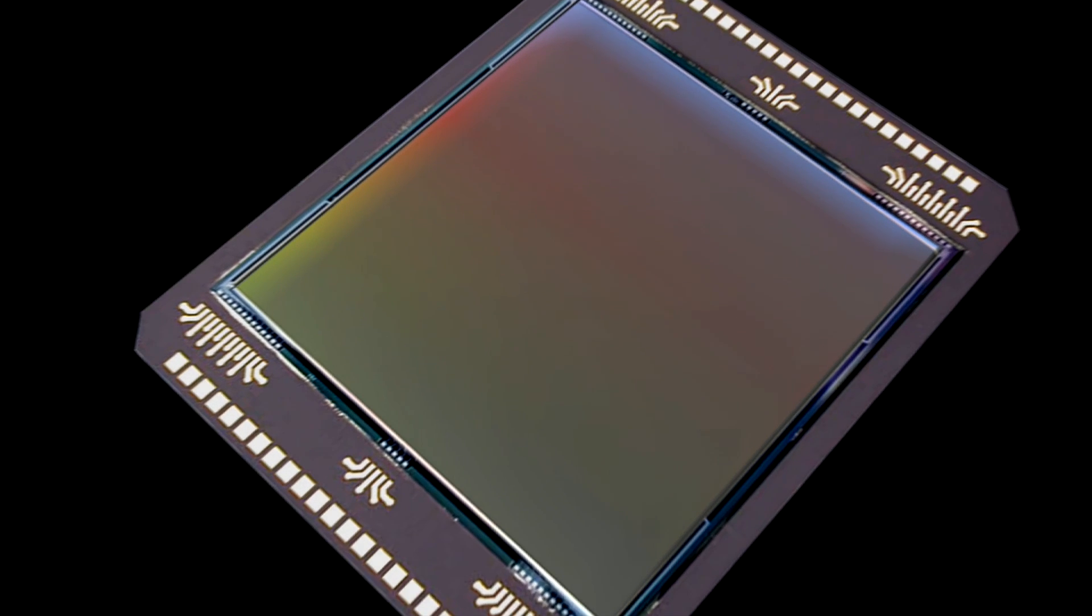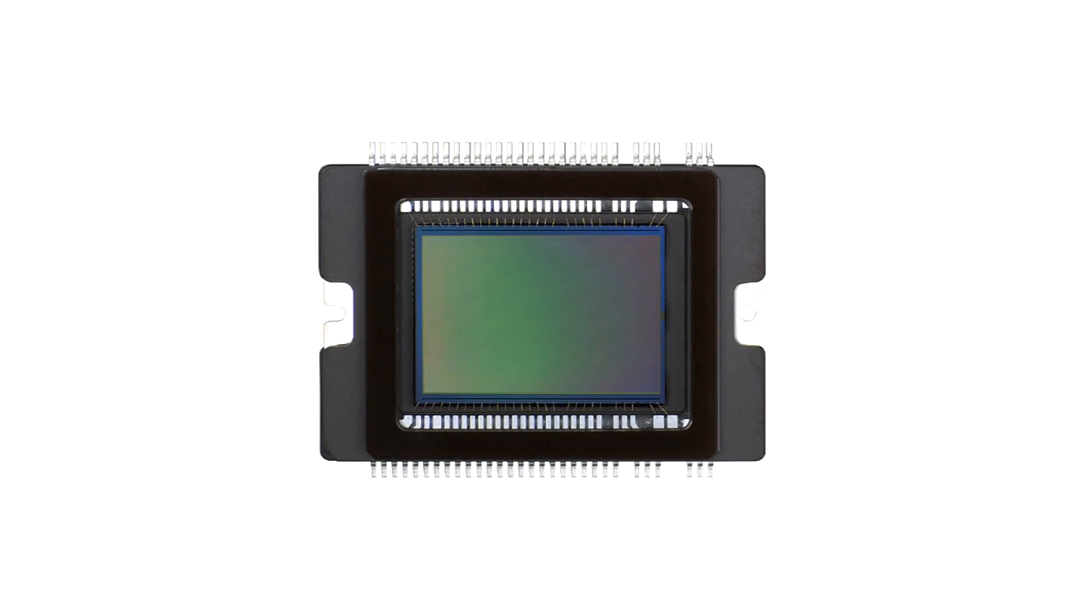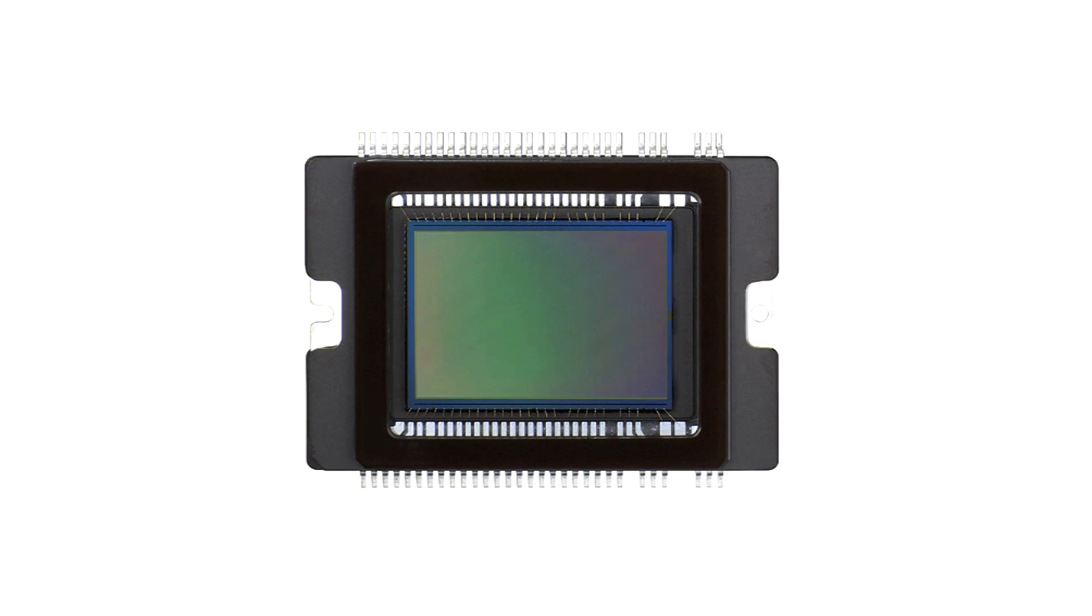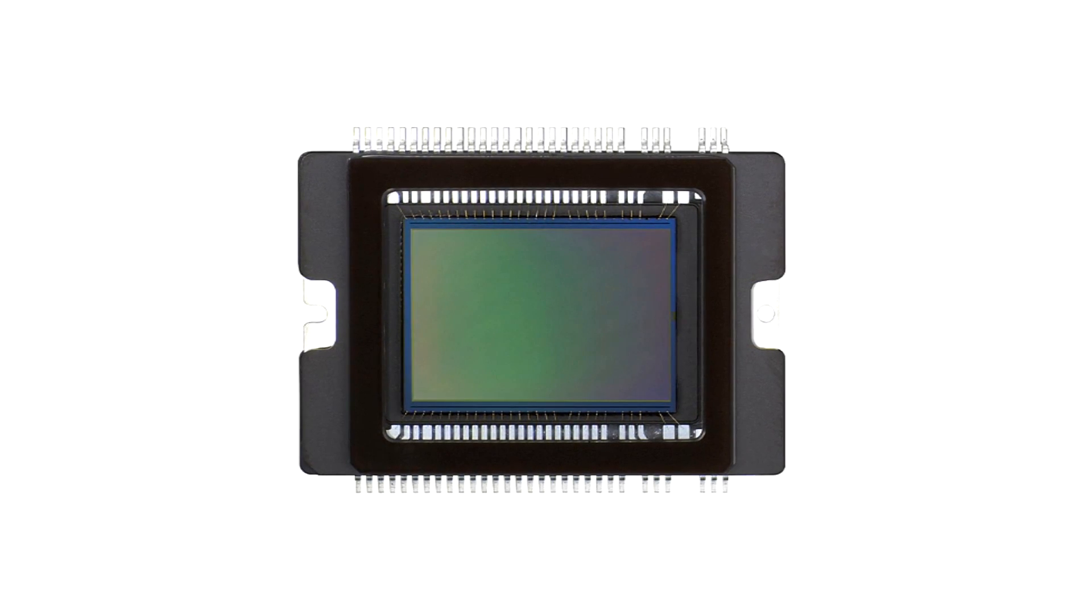The digital revolution changed all that. Silicon replaced silver, pixels replaced grains. Even in consumer cameras, we no longer use photographic film. Instead images are recorded on a light-sensitive chip, a charge-coupled device, or CCD for short.